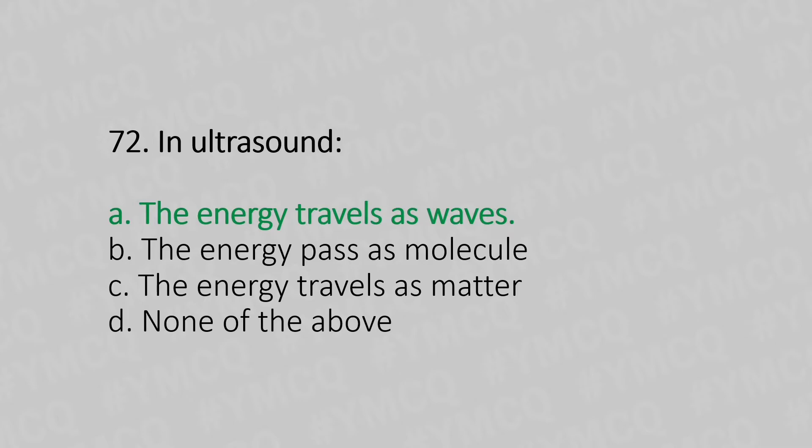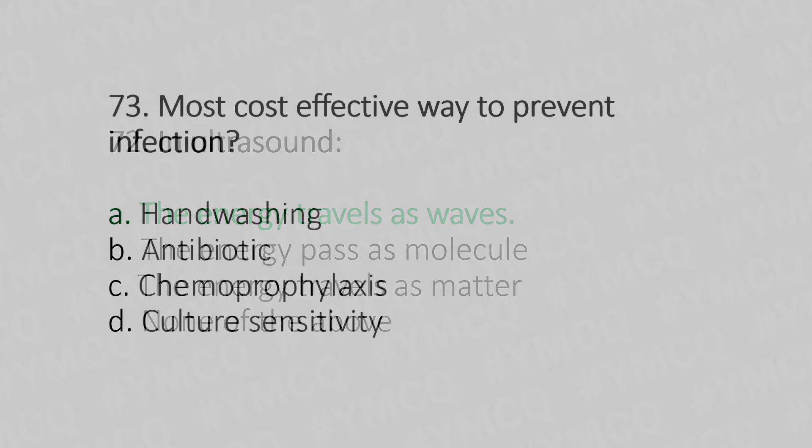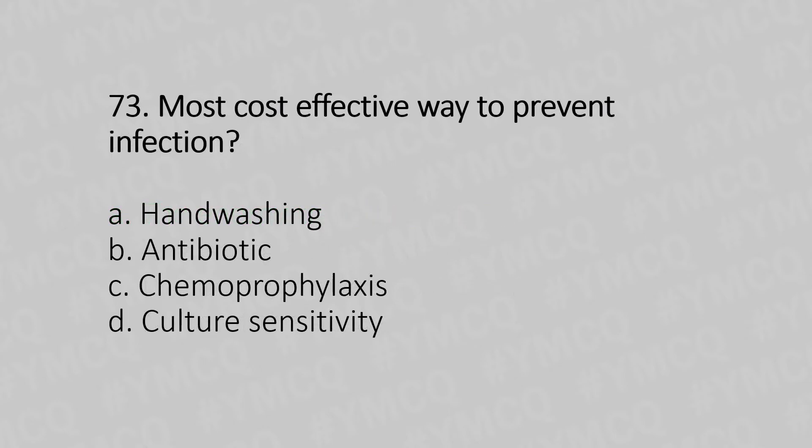Question 73: Most cost-effective way to prevent infection — option A: hand washing, option B: antibiotics, option C: chemoprophylaxis, option D: culture sensitivity. The answer is option A: hand washing.